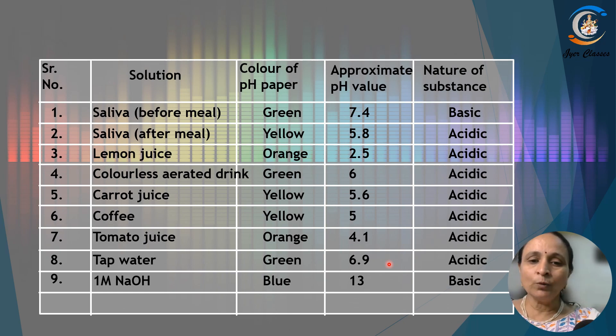Then you have got NaOH 1 mole. It turns blue, so it is basic, approximately 13 is the pH value. Then you have got 1 mole of HCl. It is turning red. The pH value is approximately 1, so it is acidic.